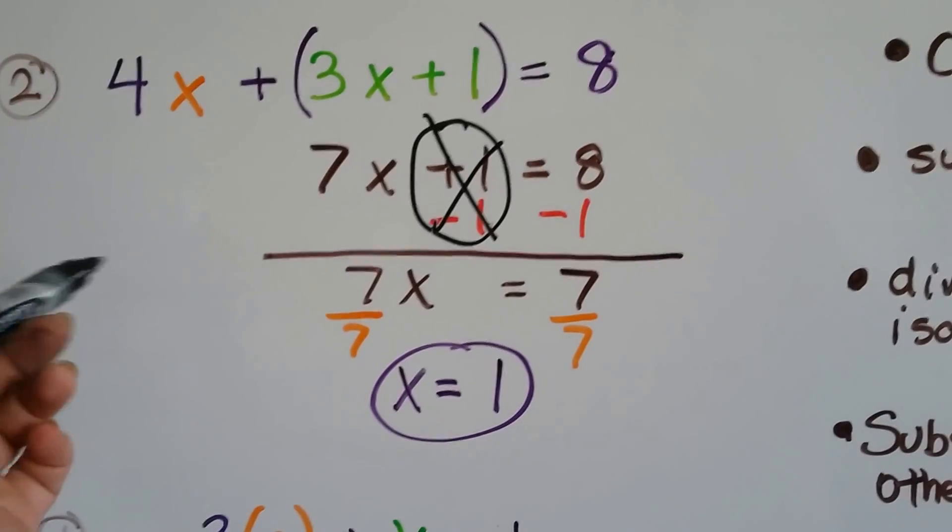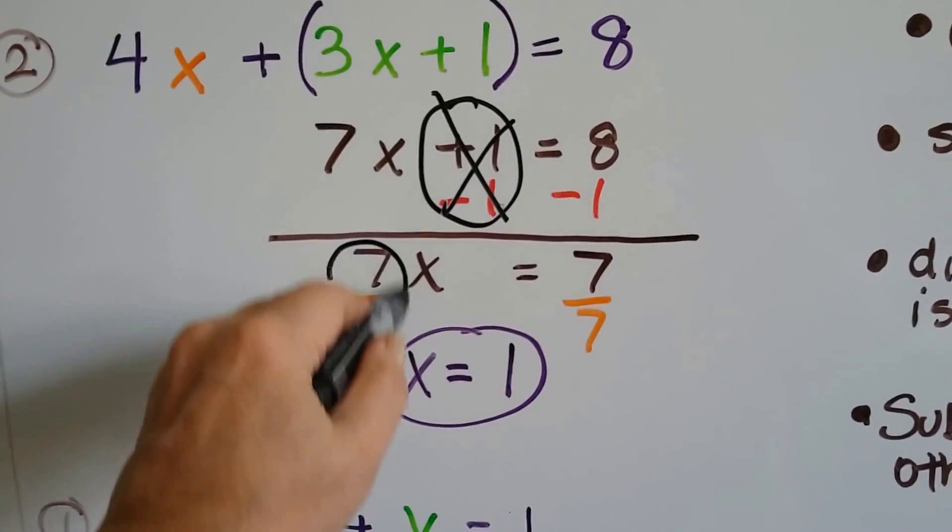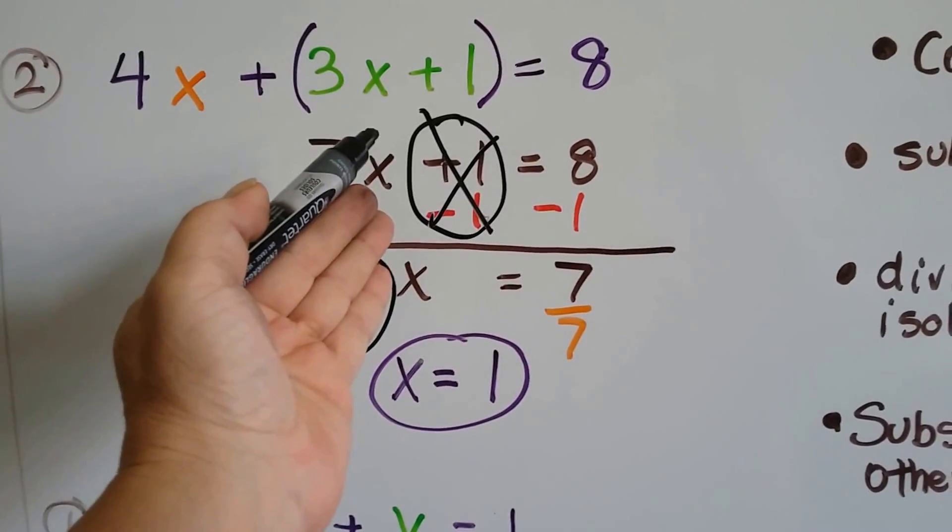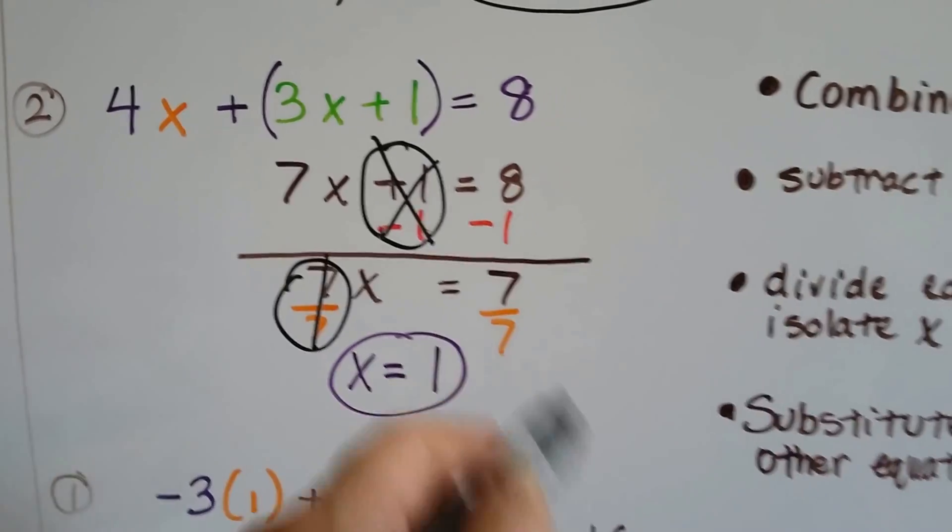So as we've always done with linear equations, we divide both sides by 7 to isolate that x, and we get our friend the invisible 1 again. So we just have an x, 1x, is equal to 1. 7 over 7 equals 1.